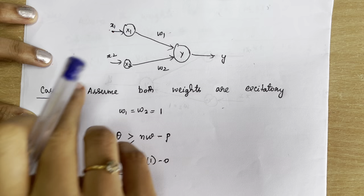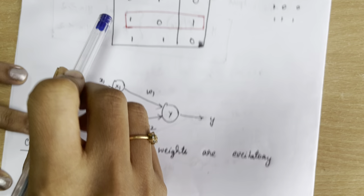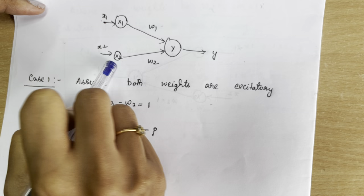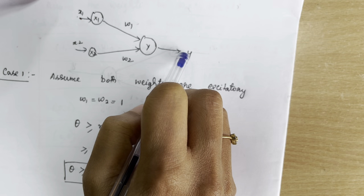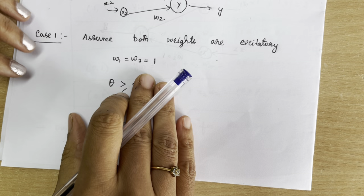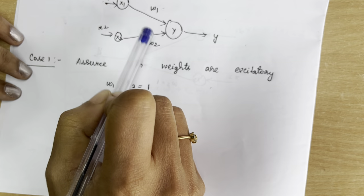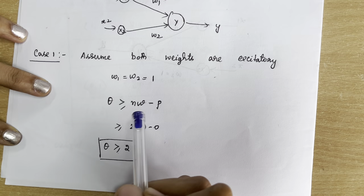We will now draw the diagram for the AND-NOT function using the McCulloch-Pitts neuron. The diagram has two inputs x1 and x2, one output y, and two weights w1 and w2 on the communication links. For Case 1, we assume both weights are excitatory — that is, both w1 and w2 are positive — and we set w1 = w2 = 1.